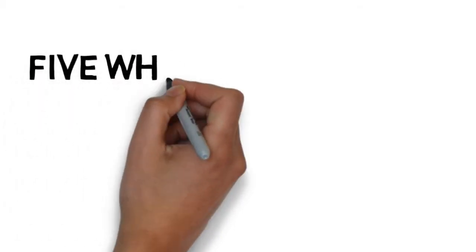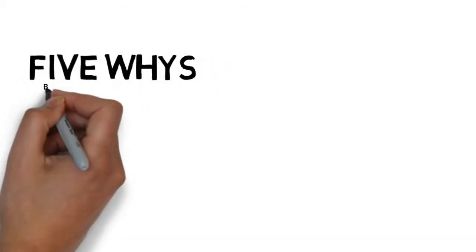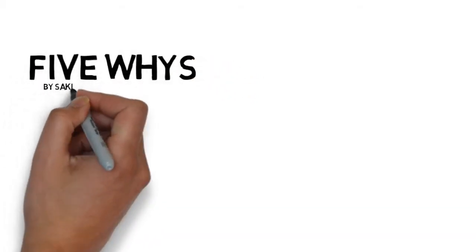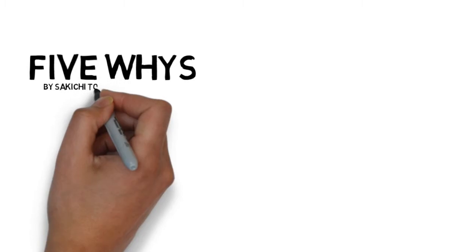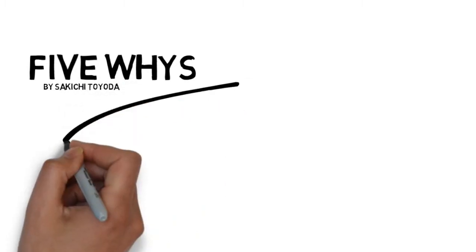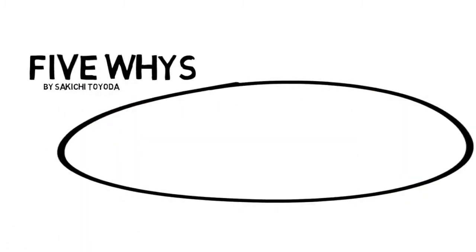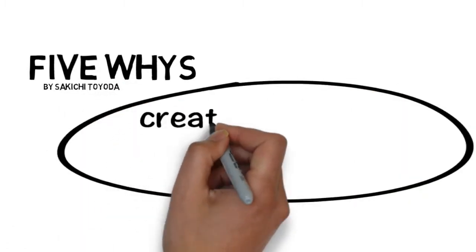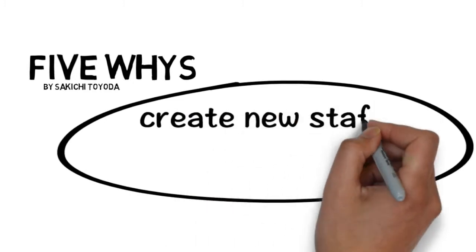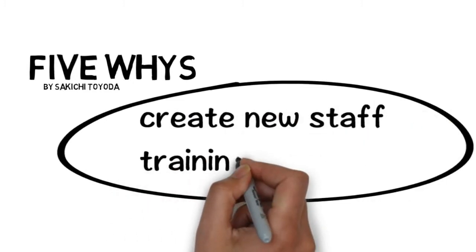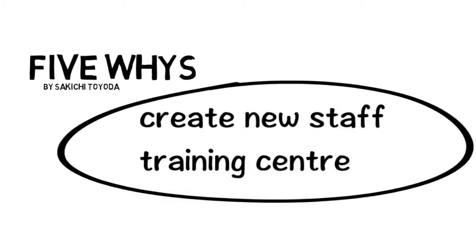This technique is called the five whys because it uses the question why to get to the root cause or hidden elements of your problem. So let's say for example you're trying to decide whether to create a new staff training centre at work. What we're going to do is ask a series of questions: why.